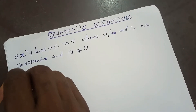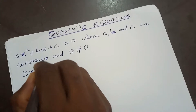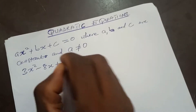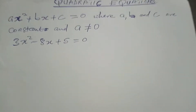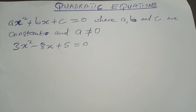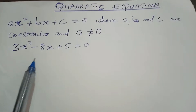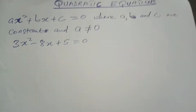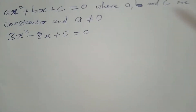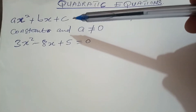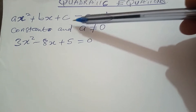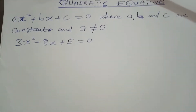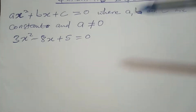An example would be 3x² - 8x + 5. Another thing to note is that quadratic equations can be written in any form — for example, 3x² = 8x - 5. However, the standard form is with the x² term first, followed by the x term, and then the constant term, all equal to zero. That is the standard form of writing quadratic equations.